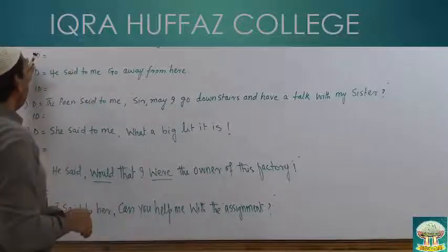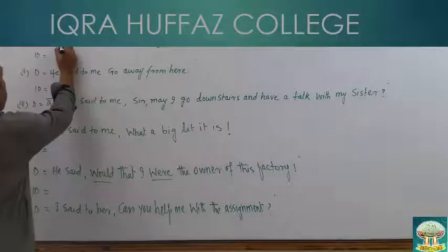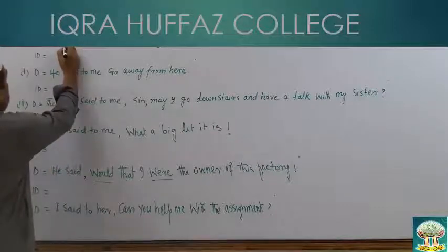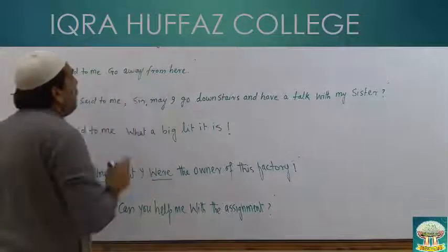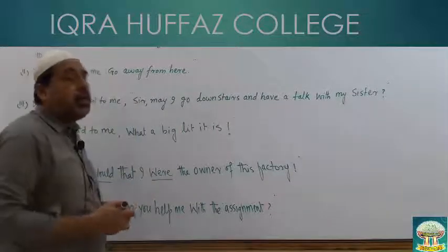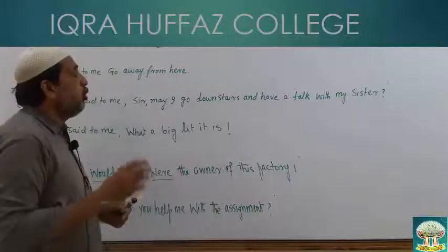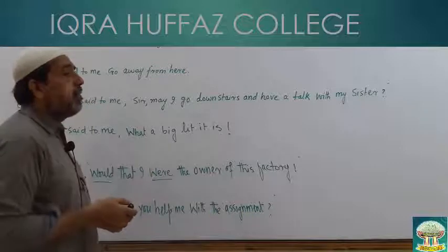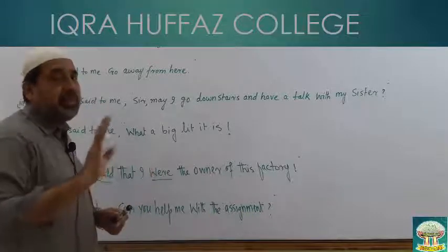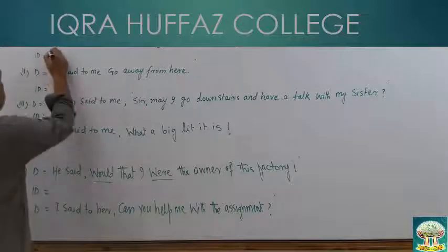पहला sentence हमें दिया हुआ है: 'He said life is not an empty drum.' Set का मतलब है reporting verb past में है। जिन्दगी एक खाली ढोल, बेकार की चीज़ नहीं है — यह universal truth है। Universal truth का ज़माना present से past में तब्दील नहीं होगा, तो आईए indirect बनाते हैं।